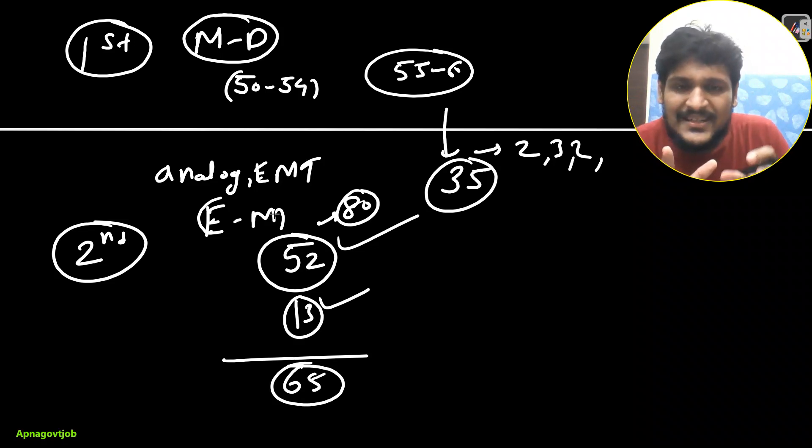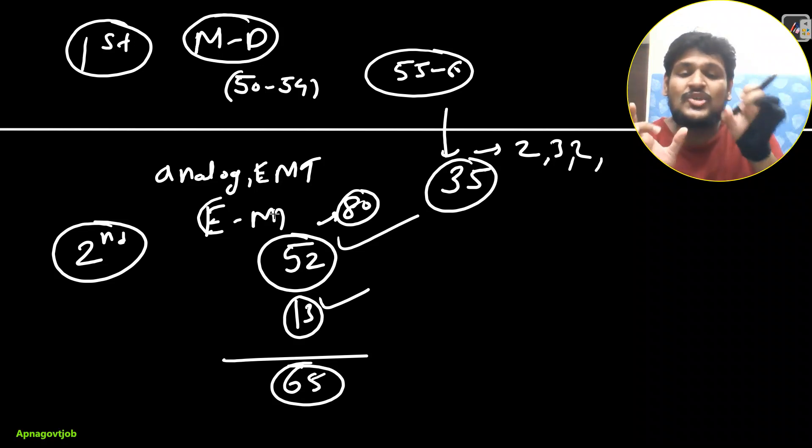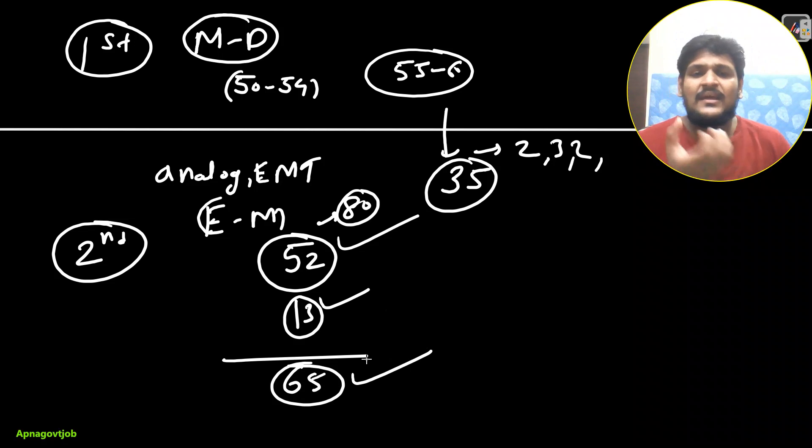Now this is the first time it is happening that the first shift level is moderate to difficult and the second shift will be easy to moderate. So the good attempt for second shift will be definitely 65, and for extraordinary or those who did a very good preparation, for them 65, and maximum it will vary to 58 to 65. So this is the best attempt. If you are in this range, definitely you can expect the call.